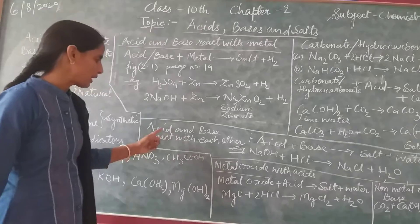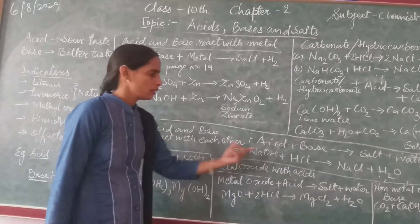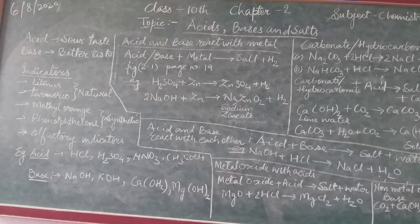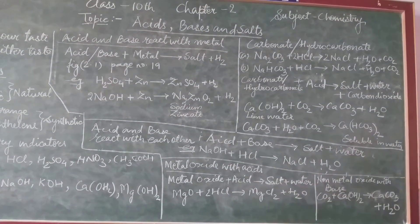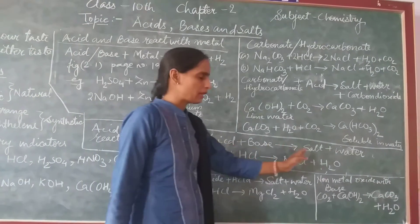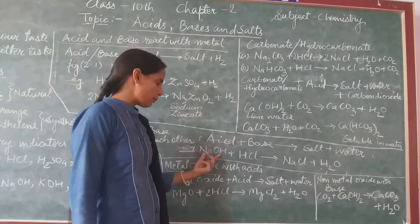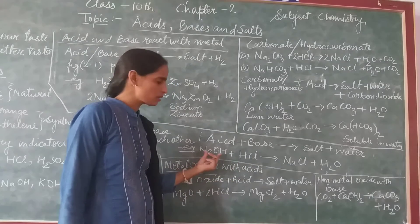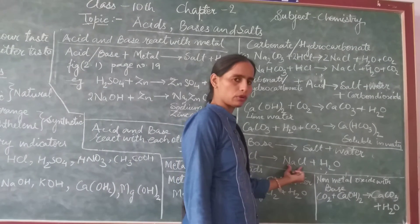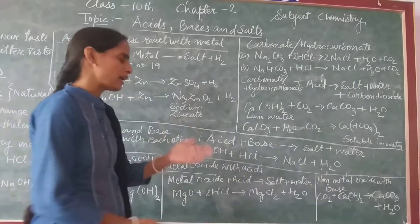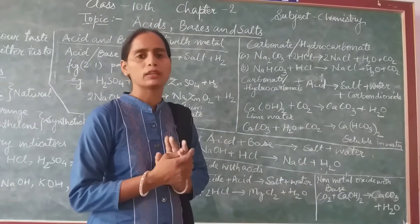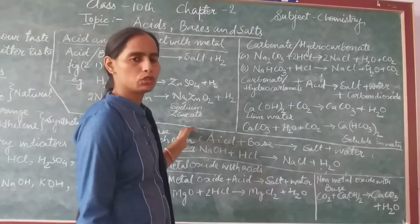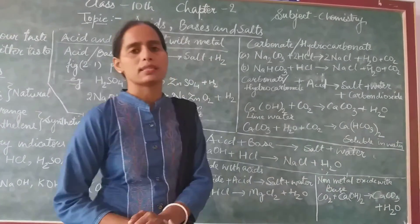First, let's see: acid and base react with each other — what is the result? Acid and base react to give salt and water. For example, when you have sodium hydroxide (a base) and hydrochloric acid, they react. Sodium hydroxide plus hydrochloric acid gives sodium chloride and water. This is called a neutralization reaction.